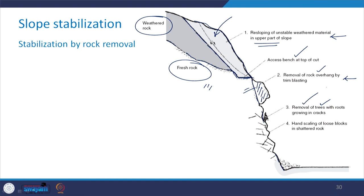These trees should be removed. Then, hand scaling of loose blocks in the shattered rock is carried out in order to have the profiling or re-profiling of the slope. This is how, using rock removal, we can stabilize the slope.